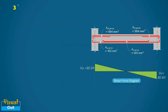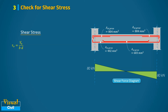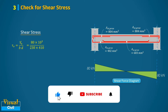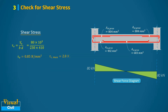In the next step we assess the beam section in terms of shear stress. The nominal shear stress due to shear force is calculated using the equation in Clause 40.1 of IS 456. By putting the values of shear force, width, and effective depth, we obtain a shear stress tau_v equal to 0.85 N/mm². From Table 20 of IS 456, for M20 grade concrete, the maximum allowable shear stress tau_c,max is 2.8 N/mm².